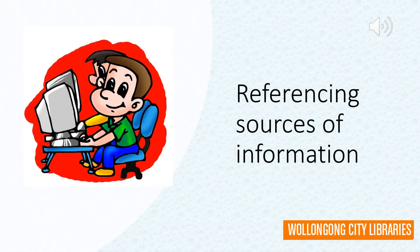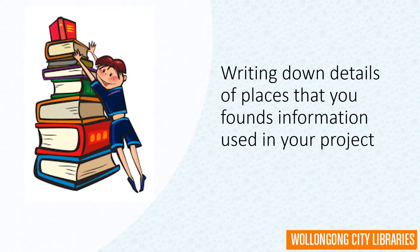In the local history prize, you're required to use two sources of information, and in a section on the entry form called references, you're required to write down the names of these references. When you're researching a topic, you might use a variety of different sources of information. For the local history prize, you're required to use two different places of information. A source of information could be a book, a newspaper article, interviewing your grandma, looking on the web, or some other source.